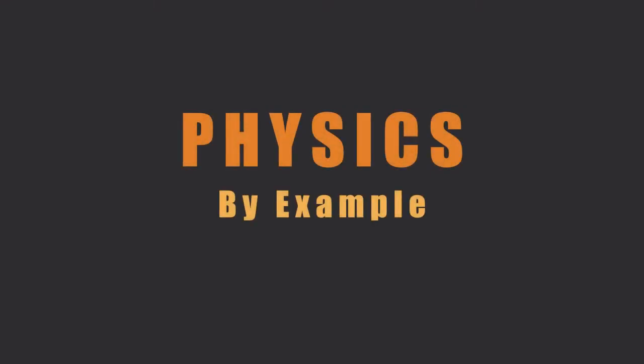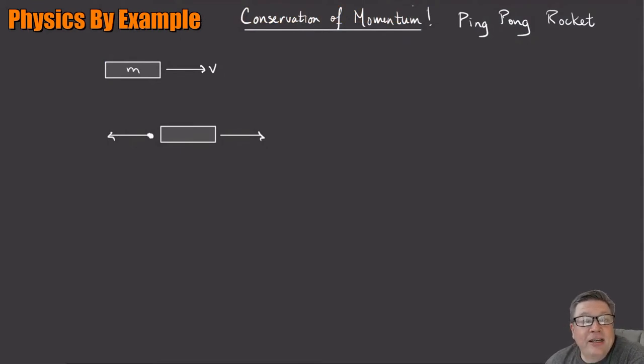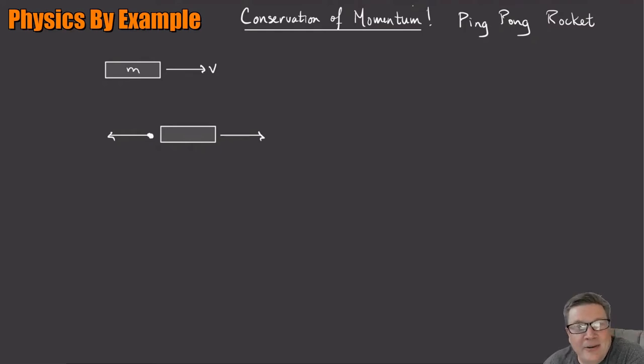Let's revisit our rocket — maybe a ping pong rocket — but let's be more careful about how we handle the changing mass. The problem with a rocket is that its mass is changing over time as you expel fuel out the back as exhaust, so we have to take that into account, which makes things a little more complicated.